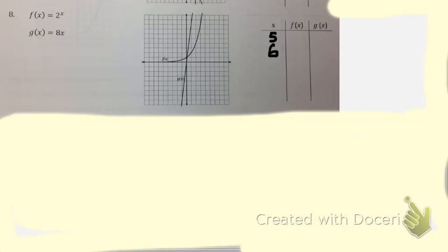So what is 2 to the 5th power? 32. What is 2 to the 6th power? 64.